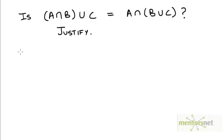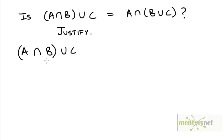So if we have an expression like A intersection B union C, if we parenthesize it one way we might get one kind of result, and if we parenthesize it another way we might get a different kind of result. So we suspect that these two sets are actually not the same.